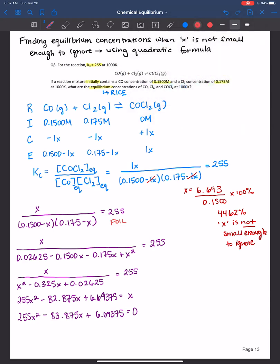And this looks like ax squared plus bx plus c is equal to 0. So in this case here, a is 255, b is a negative 83.875, and c is 6.69375.